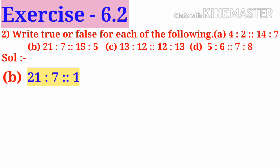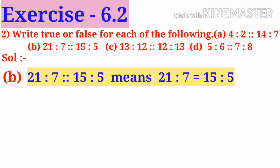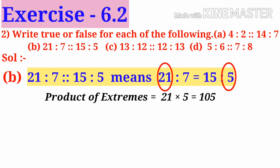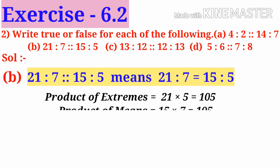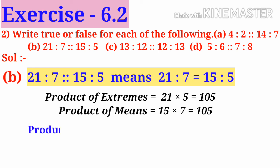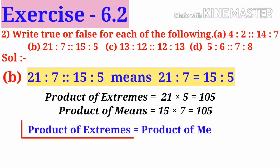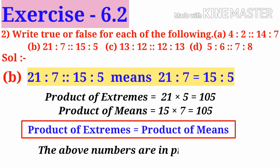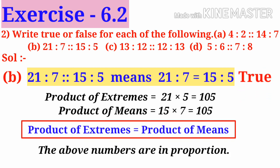B: 21 is to 7 is same as 15 is to 5, meaning 21 is to 7 is equal to 15 is to 5. Take the extreme values 21 and 5. Take the product: 21 into 5 is 105. Take the middle terms and take the product: 15 into 7 is also 105. So both values are equal. So product of extremes is equal to product of means. The above numbers are in proportion, so the above statement is true.